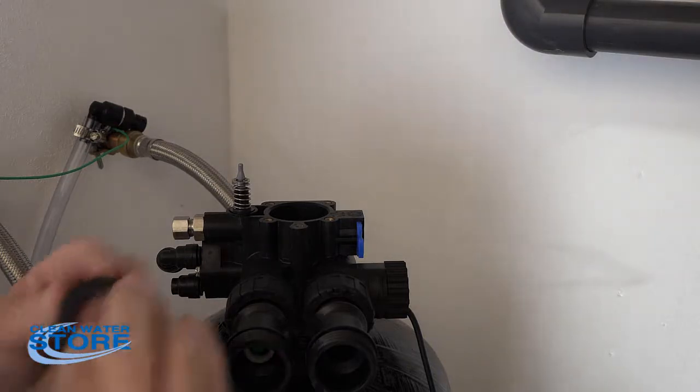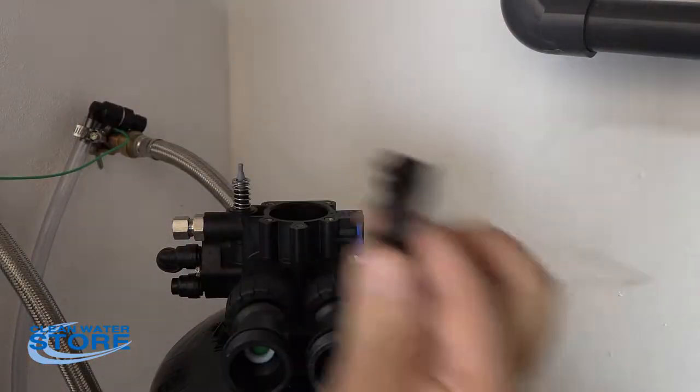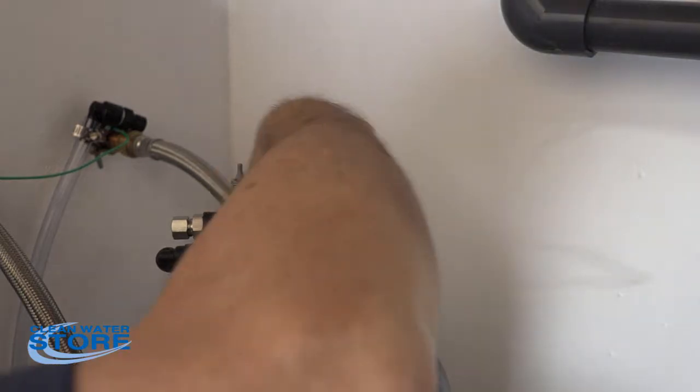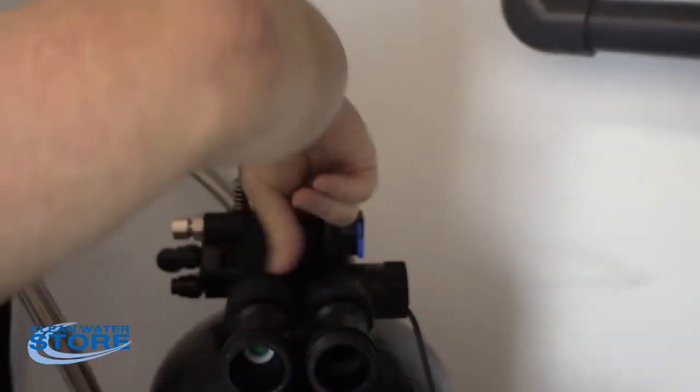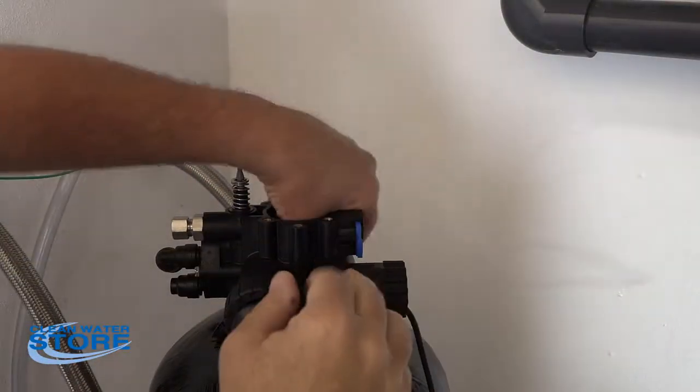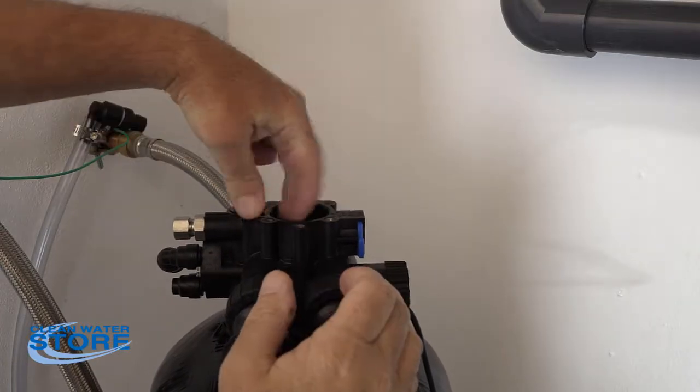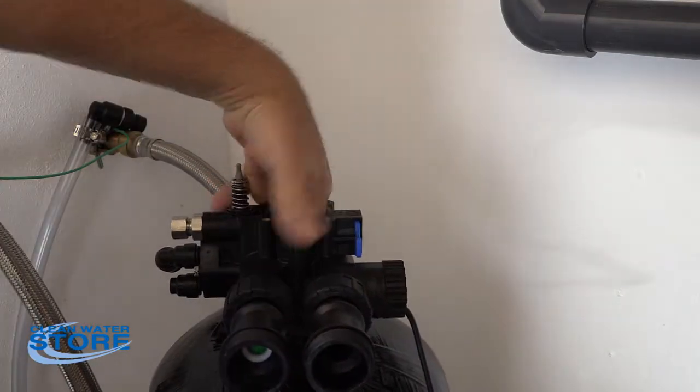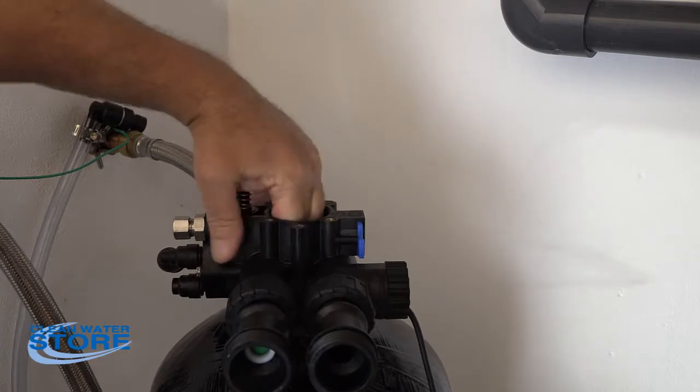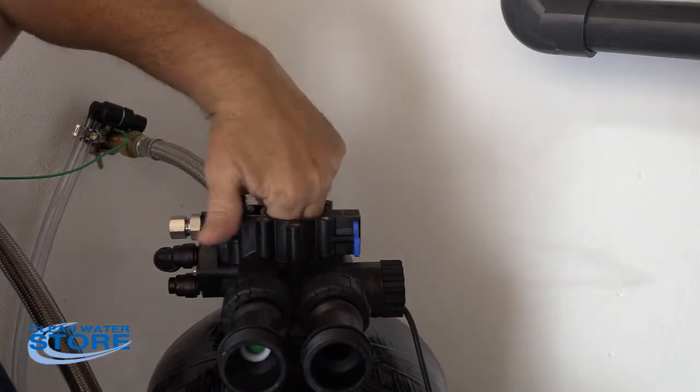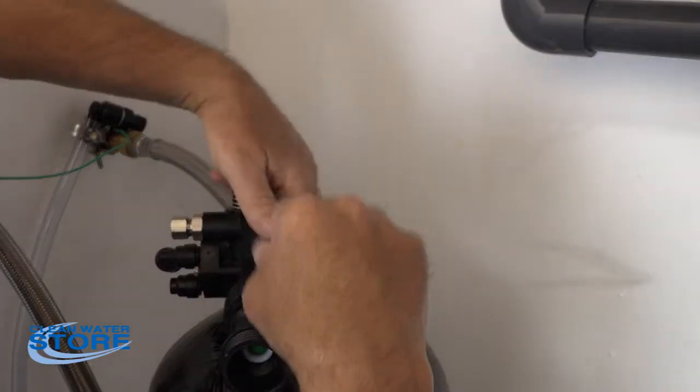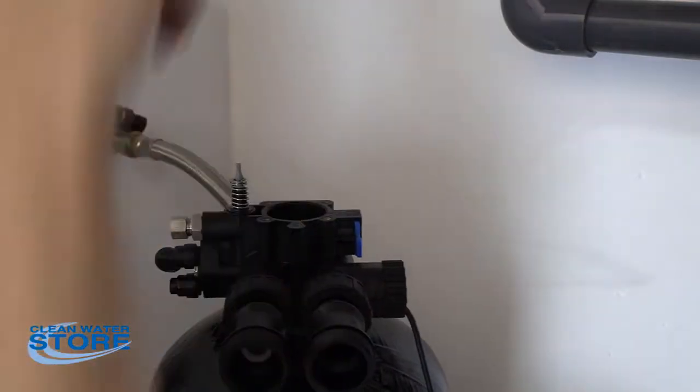Now what you want to do is go ahead and get this bottom seal in there once you get everything cleaned out. Make sure you clock it correctly. Your valve will not work if you smash those down. You can kind of feel it. I spin it until I can feel it lock in and then I know it's locked in. I can't spin it so I've got it locked in there.